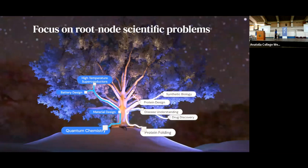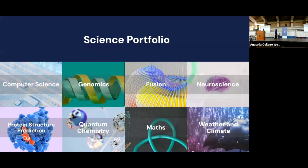And then another example of a root node challenge we're really interested at DeepMind is quantum chemistry, which again, we feel like if we were to solve some of the challenges in that domain, that could potentially unlock many downstream applications. And there are a few other root node domains that we think AI could help unlock many challenges in. And so this is the current AI for science portfolio at Google DeepMind. We are very interested in AI for computer science, using AI to understand the genome, AI for fusion and neuroscience, protein structure prediction and quantum chemistry as already mentioned, and we'll talk a little bit more about those today. And we're also interested in AI for maths and weather and climate.